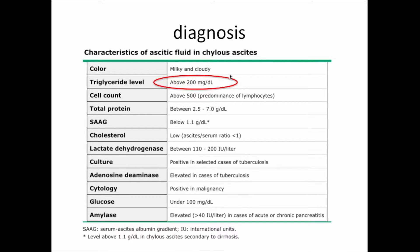If you send off the fluid for analysis and it appears milky and cloudy, you should be thinking about chylos ascites and send it for triglyceride levels. A level above 200 should raise extreme concern that this patient has chylos ascites.